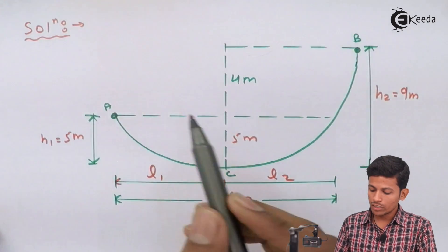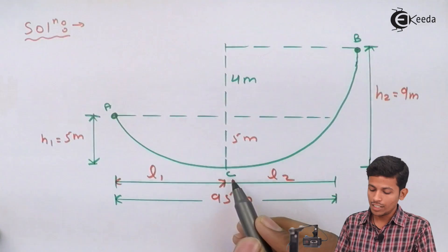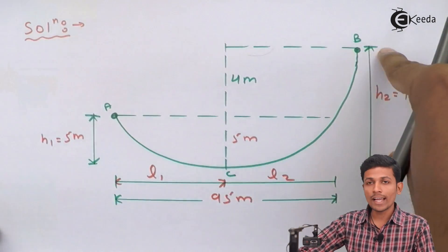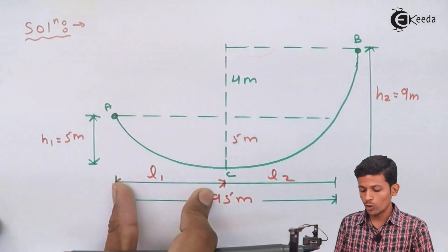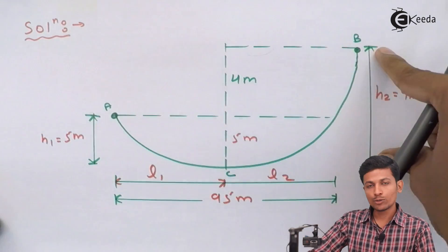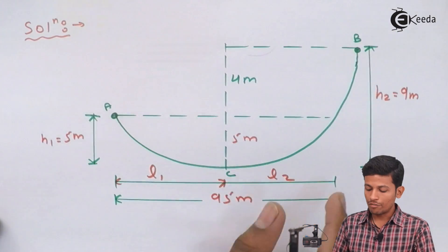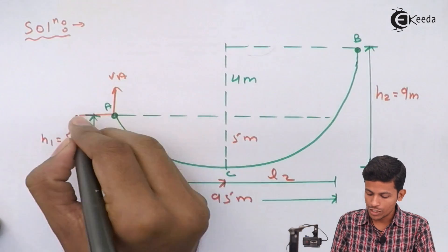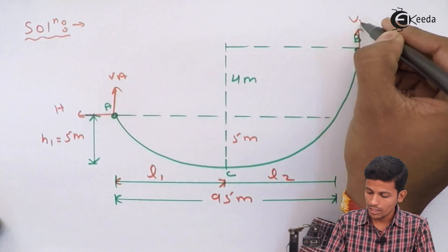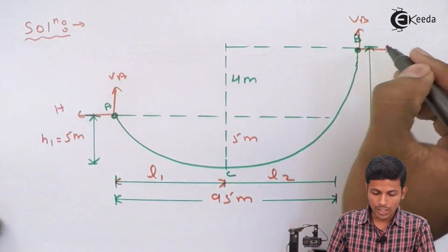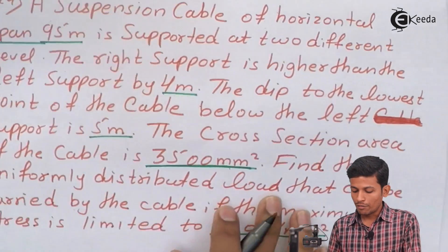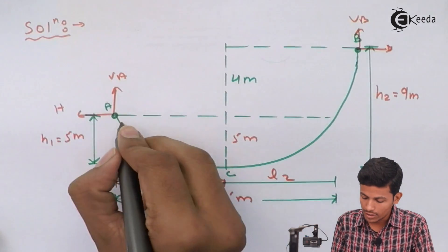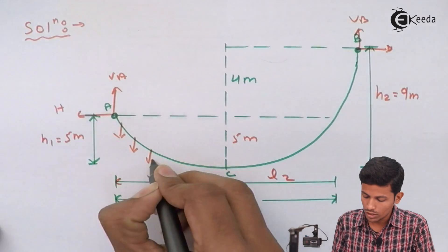On the diagram, A is the first support, B is the lowest point, and C is the right support. H1 is the depth on the left side, L1 is the horizontal distance from A to B, L2 is the distance from B to C, and H2 is the depth on the right side. We need to find VA, HA, VB, and H.